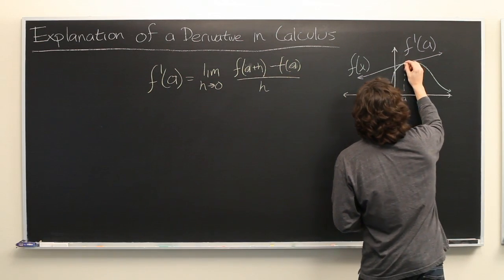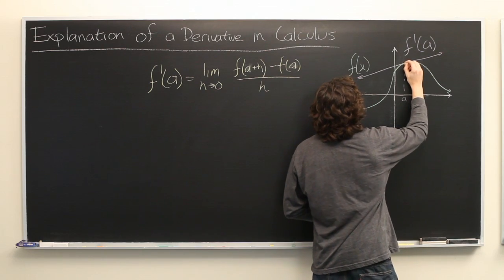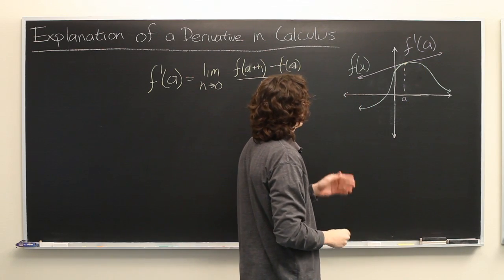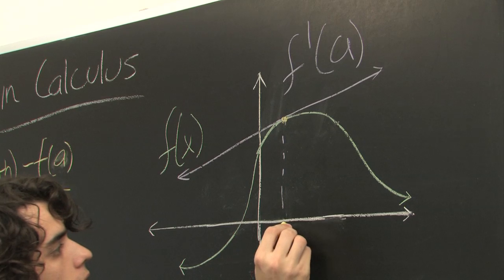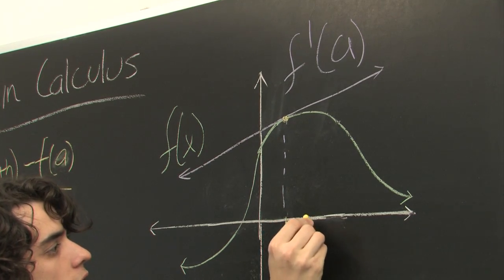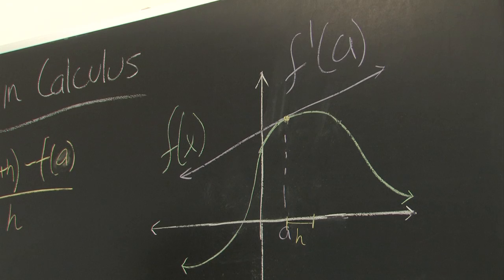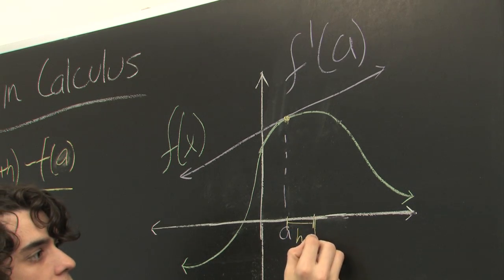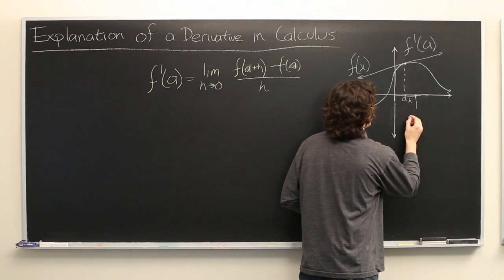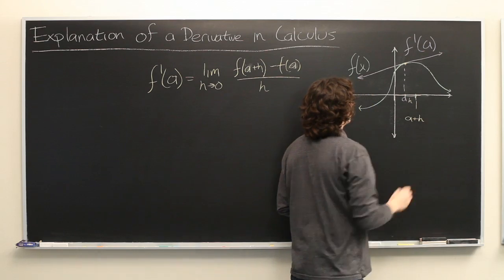So here, at this point in yellow, we have f of a. And let's make some little interval down here, which we'll call h. So this point must be a plus h, right here. Great.